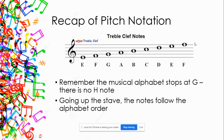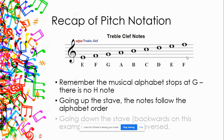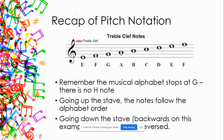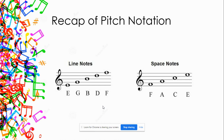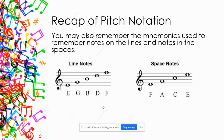If we put an extra note above F, that note would be G, sat on top of the stave. Likewise, going backwards — if I'm going down the stave, it goes backwards through the alphabet: F, E, D, C, B, A, and once we get to A we go back to G, F, E. I may have taught you some mnemonics to remember those notes.